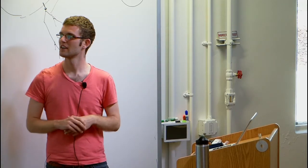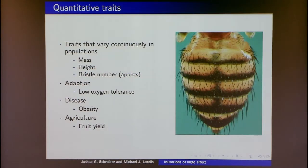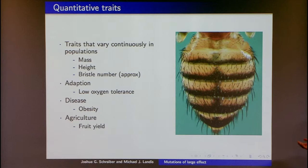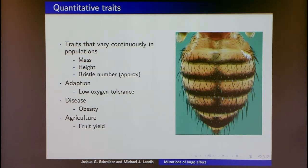To set the stage: quantitative traits are traits that vary continuously in populations. Obvious examples are body mass, height, and the famous bristle number of Drosophila. These can be important in adaptation — for example, tolerance to low oxygen — obviously in disease, where obesity is a discretization of a quantitative trait of body mass or BMI, and in agriculture, where fruit yield and seed yield are important for optimization.